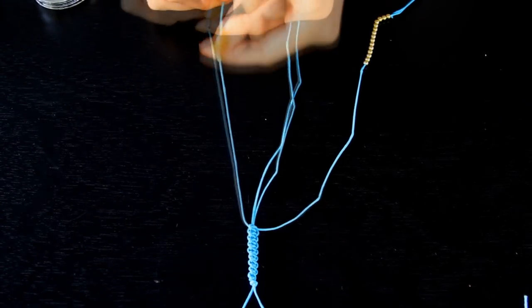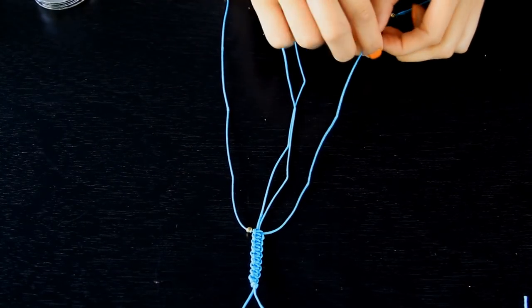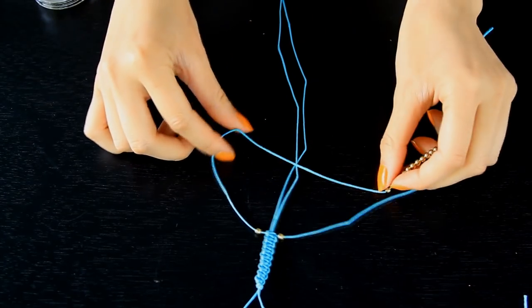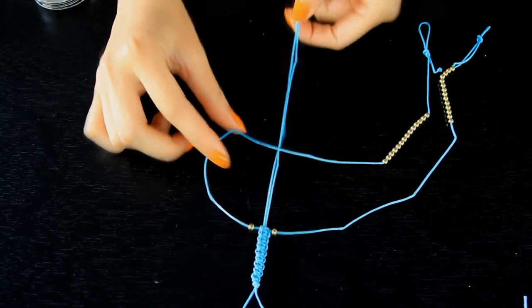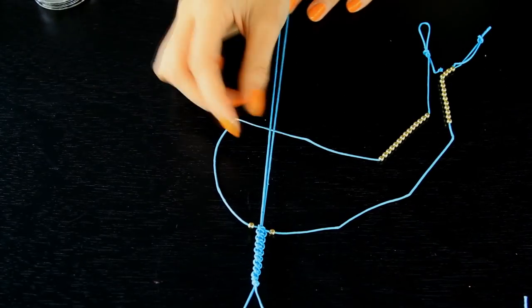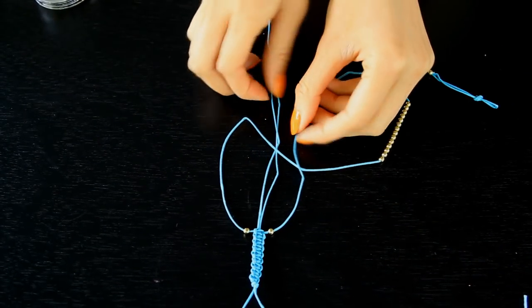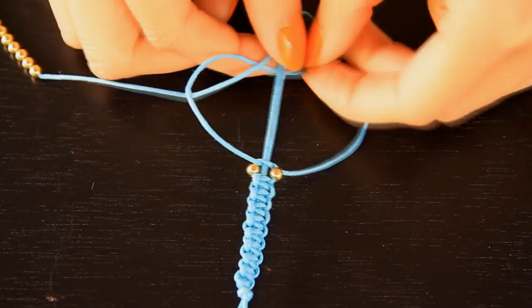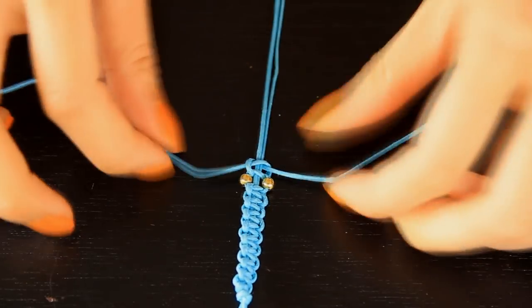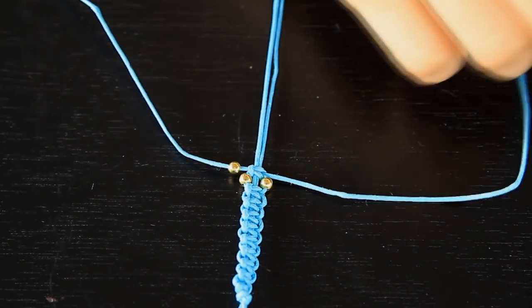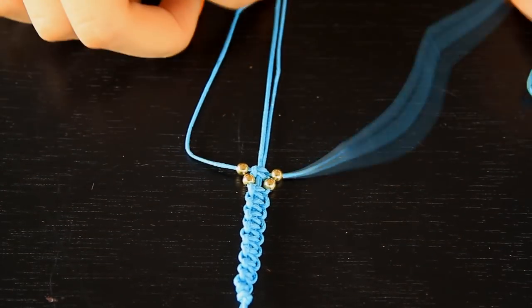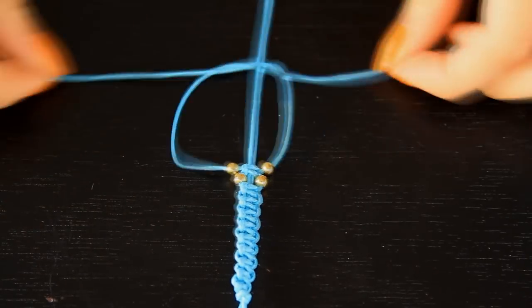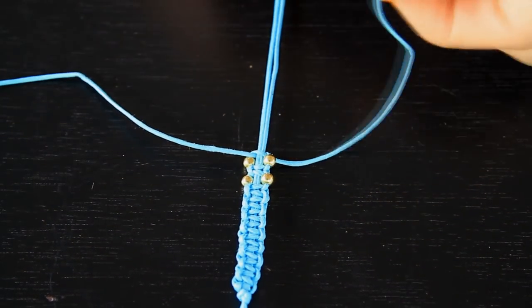So now what you're going to do is you're going to add one bead per every other square knot. So watch as I'm doing this. So my first square knot, I'm going to add a bead on each side. Then I'm going to make a square knot without the beads. Alright, now I'm going to repeat again adding the beads. Again, my next square knot is just going to be a regular square knot without the beads. And then you do this until you run out of beads.